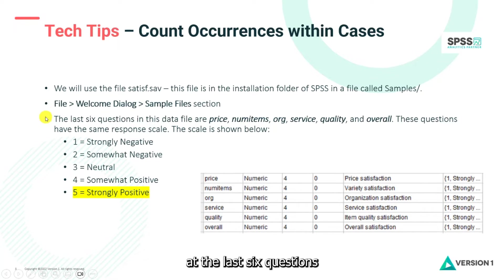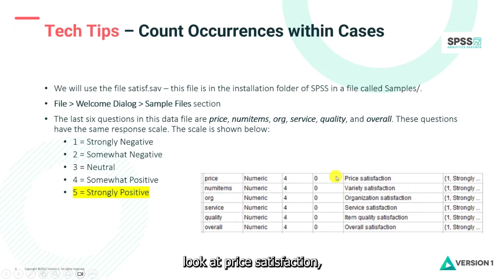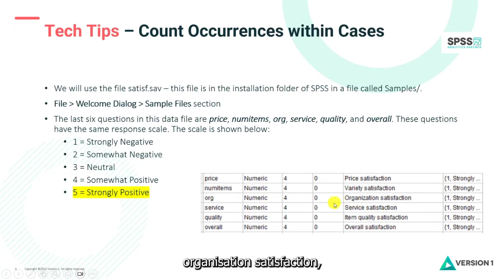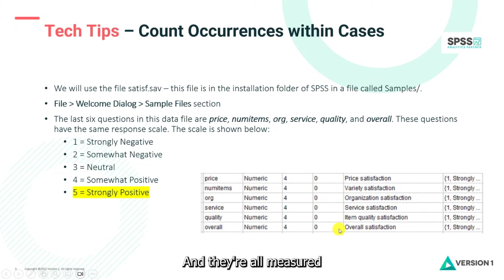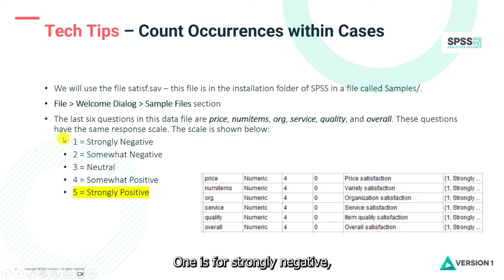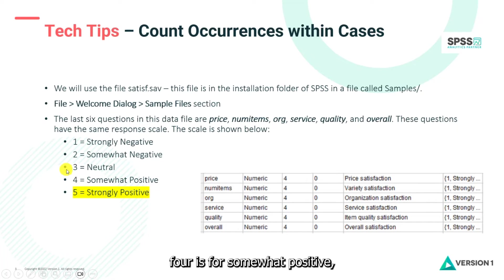We're going to look at the last six questions in this data file. These questions look at price satisfaction, variety satisfaction, organization satisfaction, service satisfaction, item quality satisfaction, and overall satisfaction — all measured on the same scale. One is for strongly negative, two is for somewhat negative, three is for neutral, four is for somewhat positive, and five is for strongly positive.